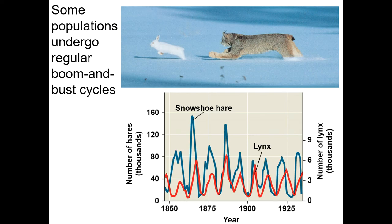Here's another example — the snowshoe hare and the lynx. The lynx eat the snowshoe hares, and their populations seem to cycle together. If there are more snowshoe hares, the lynx population goes up a bit afterward because food is available. However, these boom-bust cycles with the snowshoe hare may have more to do with how harsh the winter is and other predators, but the lynx population does appear to follow the snowshoe hare fairly closely.